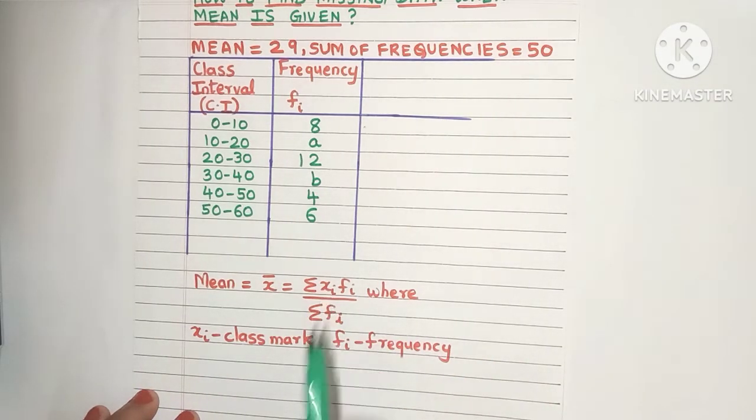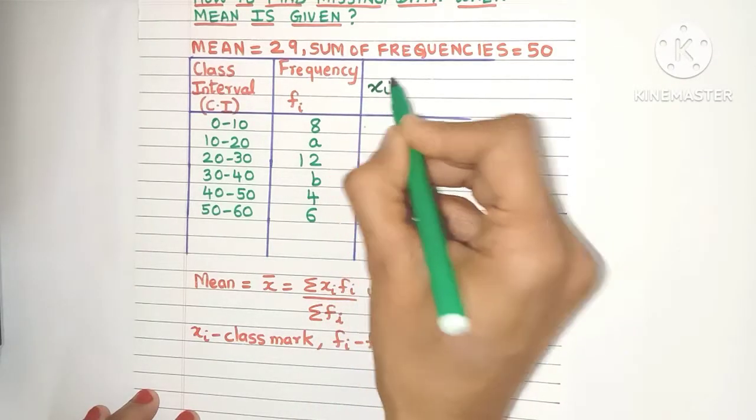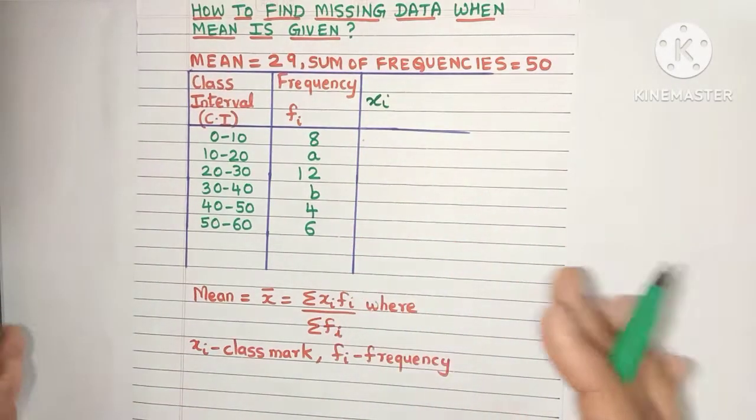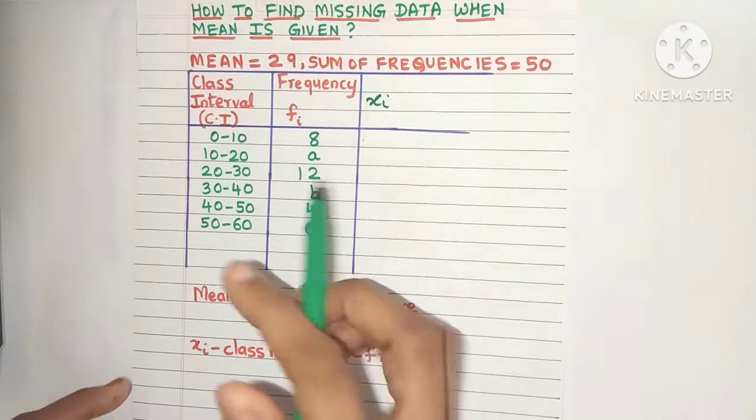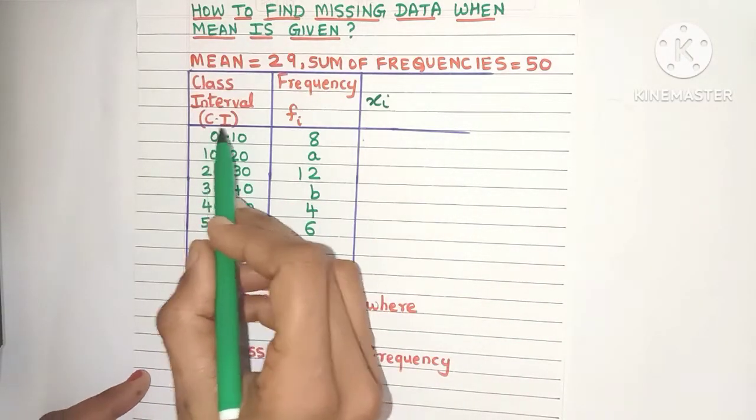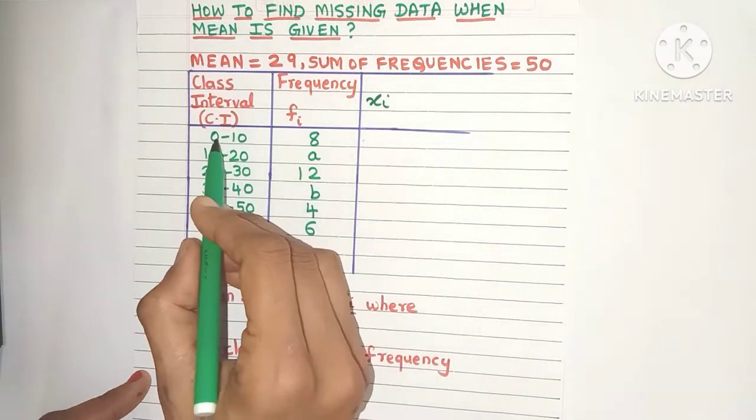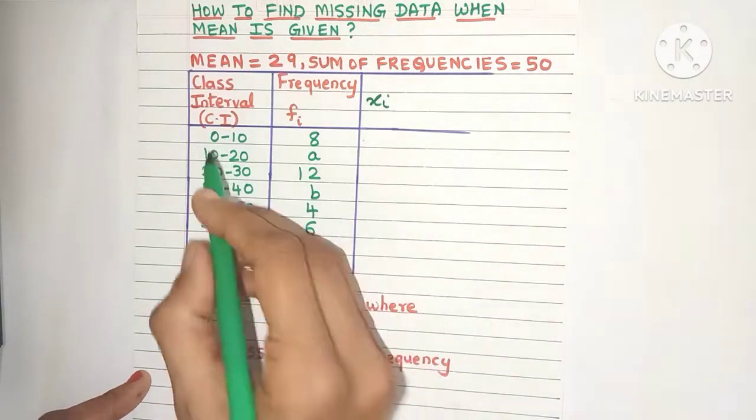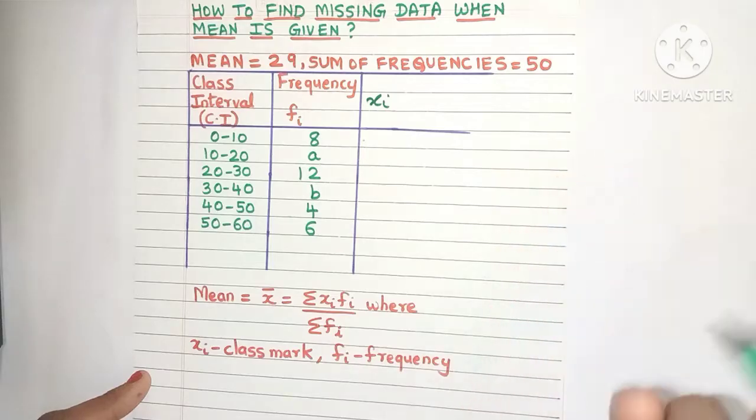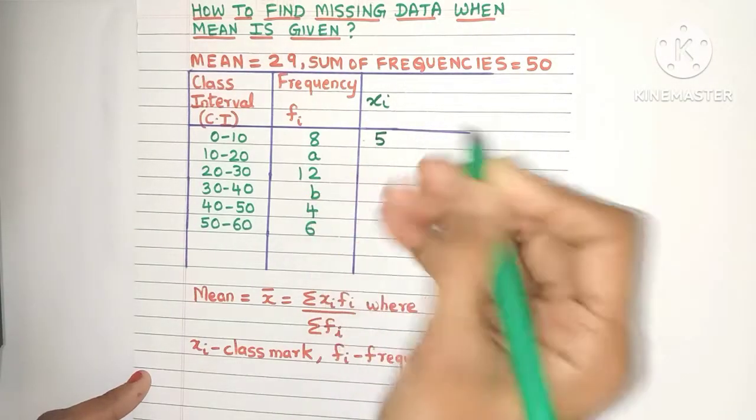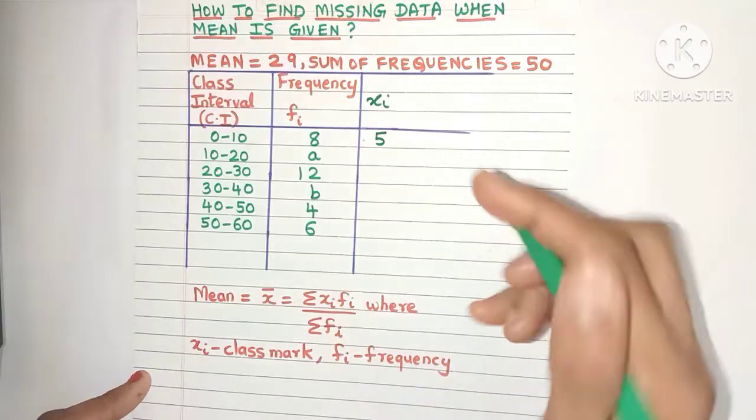The first column is the xi column. Now what is xi? xi is the class mark, which is the middle value of every class interval. You can calculate it by adding the lower limit with the upper limit and dividing by 2. So for the first class interval, 0 plus 10 is 10 divided by 2, which is 5. We got our first class mark.